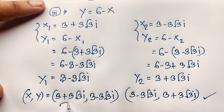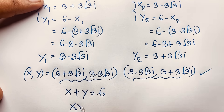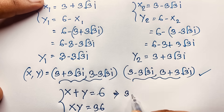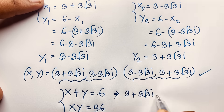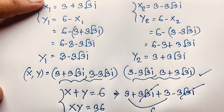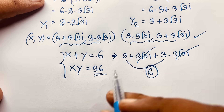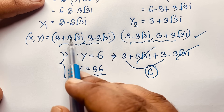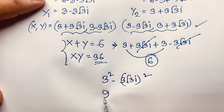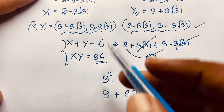Both are complex solutions — complex numbers. Let's verify: x plus y is equal to 6, x y is equal to 36 — is it right? Yes. Look: (3 plus 3i square root 3) plus (3 minus 3i square root 3) — the imaginary parts cancel out — 3 plus 3 equals 6. And for x times y, using (a plus b)(a minus b) equals a squared minus b squared: 9 minus (negative 27) equals 9 plus 27 equals 36. Left hand side equals right hand side. Our final answer is verified.